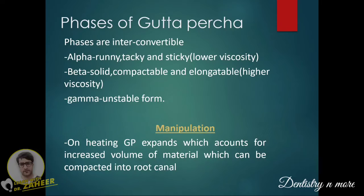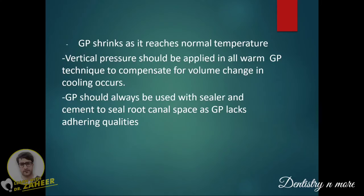The phases of gutta percha are interconvertible. The alpha phase is runny, tacky, and sticky with lower viscosity. The beta phase is more solid, compactable, and elongatable with higher viscosity. The gamma phase is an unstable form. To manipulate gutta percha, we heat it, which causes it to expand, increasing volume so it can be compacted into the root canal. After introduction, GP shrinks as it returns to normal temperature, so vertical pressure should be applied to warm GP to compensate for volume change. GP must always be used with a sealer and cement because it lacks adhering qualities.